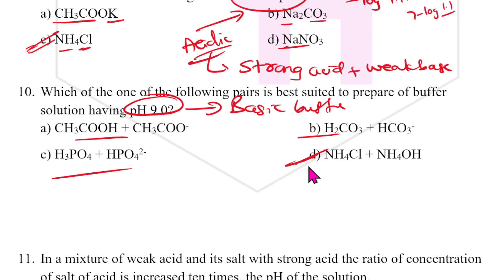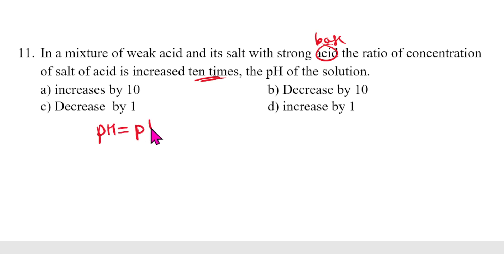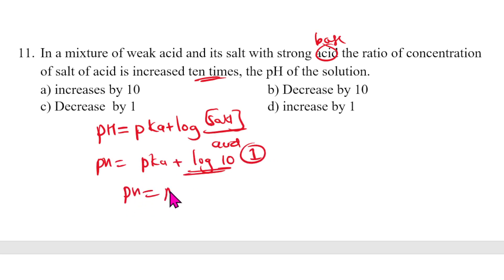Eleventh question: a mixture of weak acid and its salt with a strong base — if the salt concentration is increased 10 times relative to the acid, using Henderson-Hasselbalch: pH = pKa + log(10) = pKa + 1. So the pH increases by 1. The answer is D.